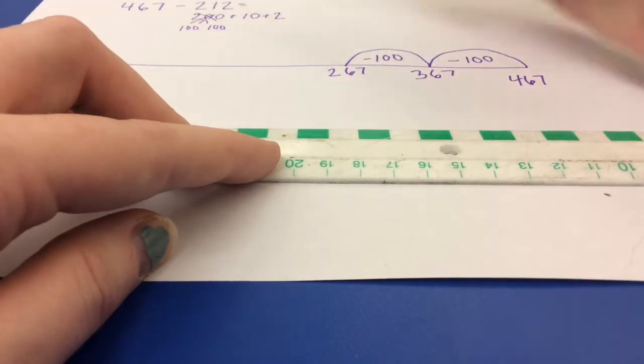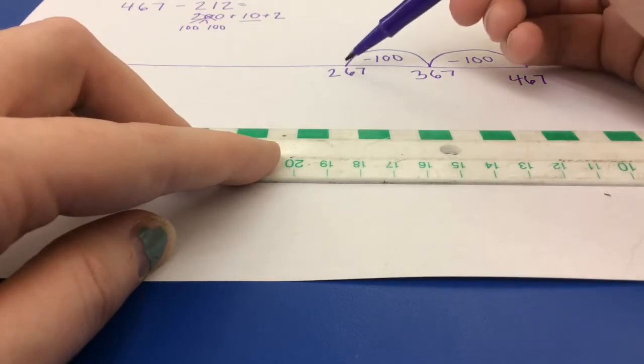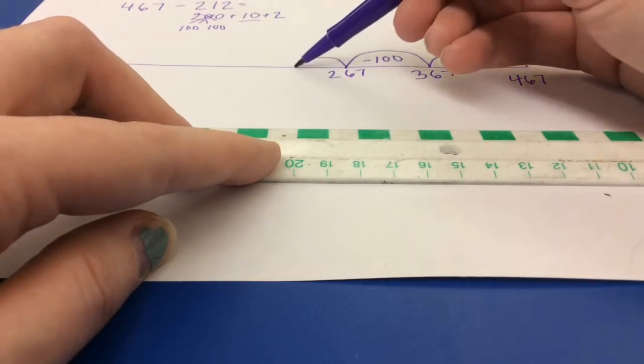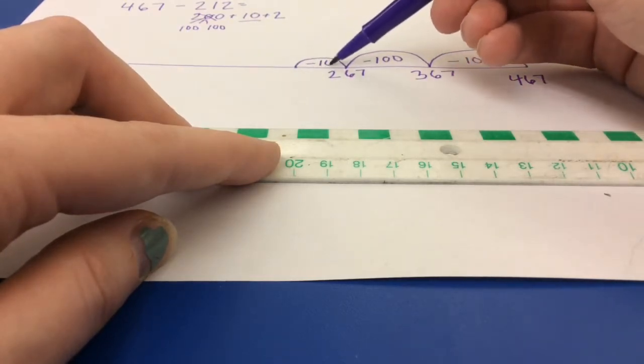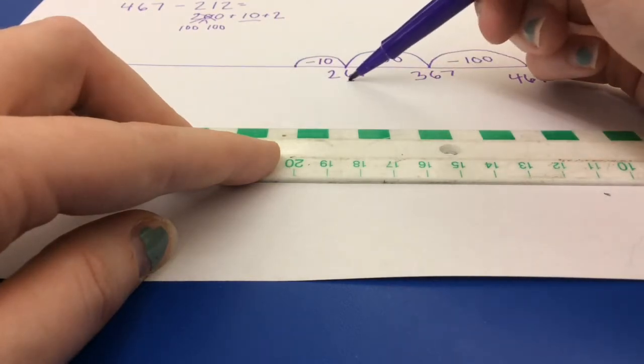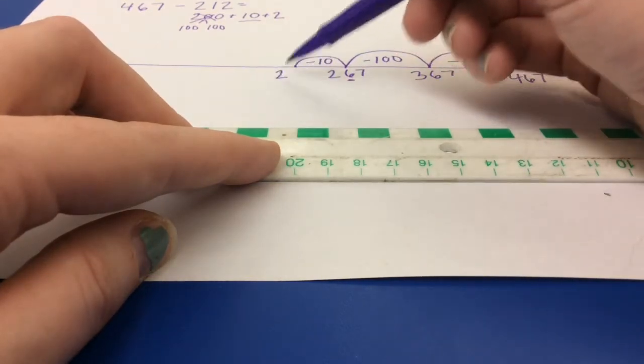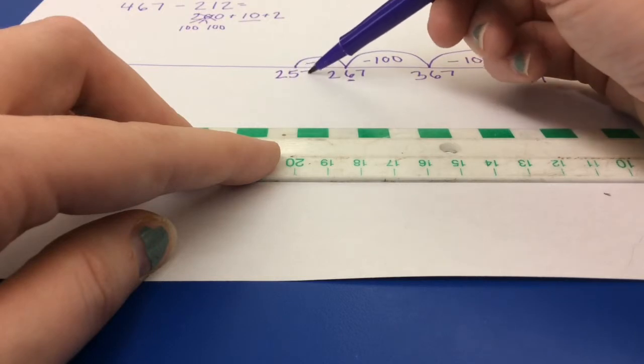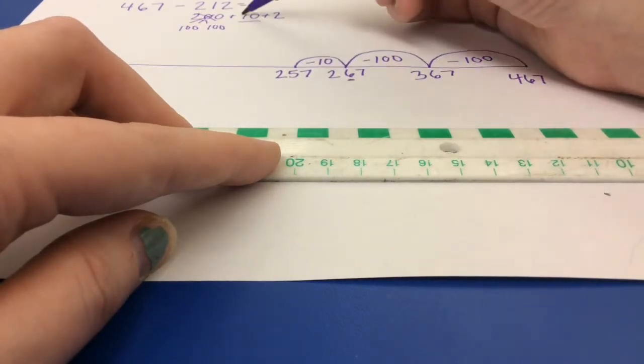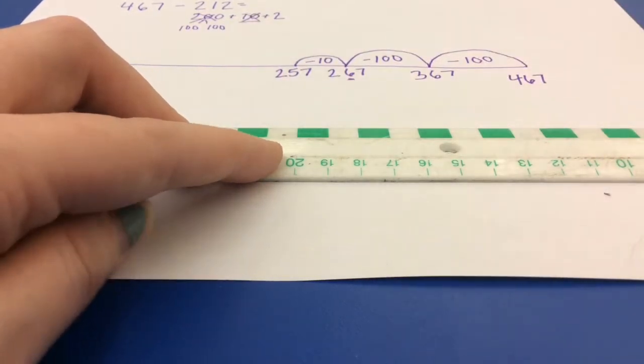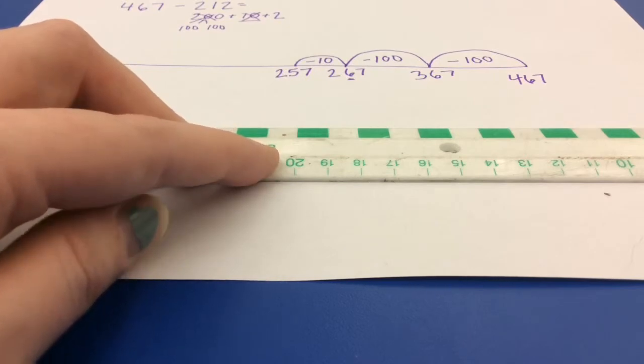Now that I've taken away 200, I look at my next number, which is 10. 267 take away 10 will only change the 10s digit, so 257. And I cross that off in my expanded form, so I know I've taken it away.